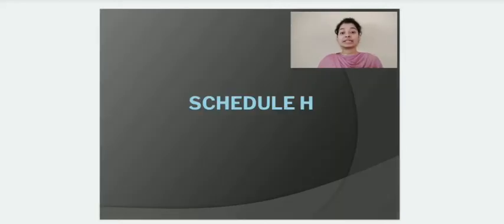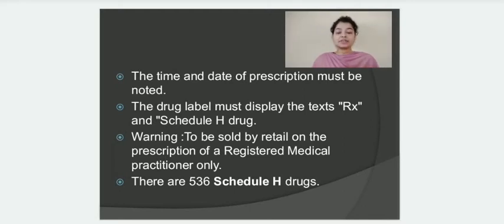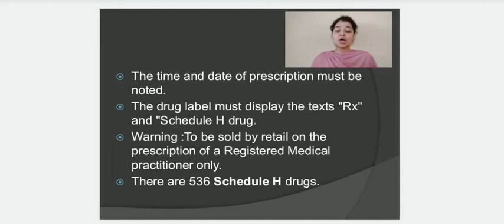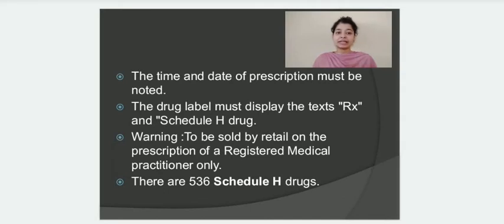The next category is Schedule H drugs. While dispensing Schedule H drugs, the pharmacist or person selling the drug should take care of the date and time mentioned on the prescription — they should not dispense Schedule H drugs for a backdated or very old prescription. Drugs categorized in Schedule H should have a label with the sign RX, and the label should clearly state that it is a Schedule H drug with a warning that this drug should be sold by retail on the prescription of a registered medical practitioner only.